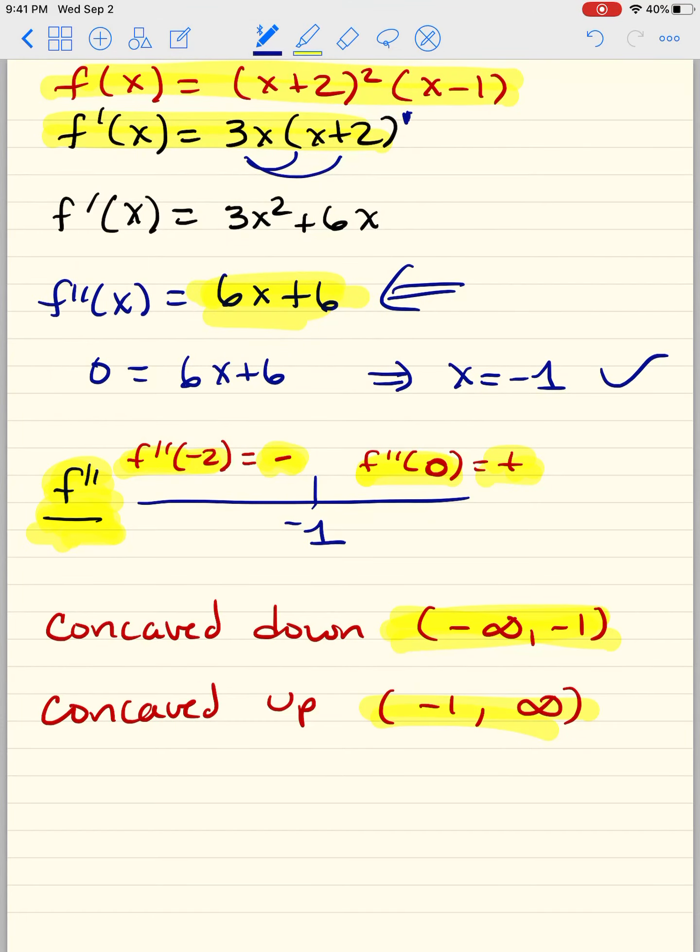Now, negative 1, this is the new thing, negative 1 is not a max or min. Actually, when we switch in the second derivative, when we switch concavity from down to up or up to down, we have something called a point of inflection, and that just tells you where your shape of the graph switches. So how do we find negative 1 comma what? Anytime you want to find any points that are on the graph, you need to plug it into the actual graph. So negative 1 plus 2 is positive 1, squared is 1, and negative 1 minus 1 is negative 2. So there's a point of inflection at negative 1, negative 2.